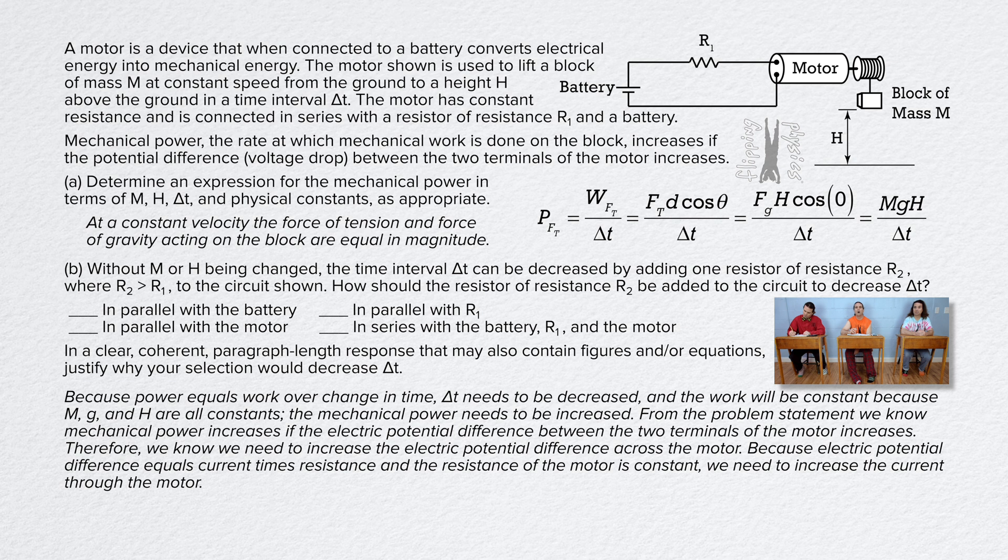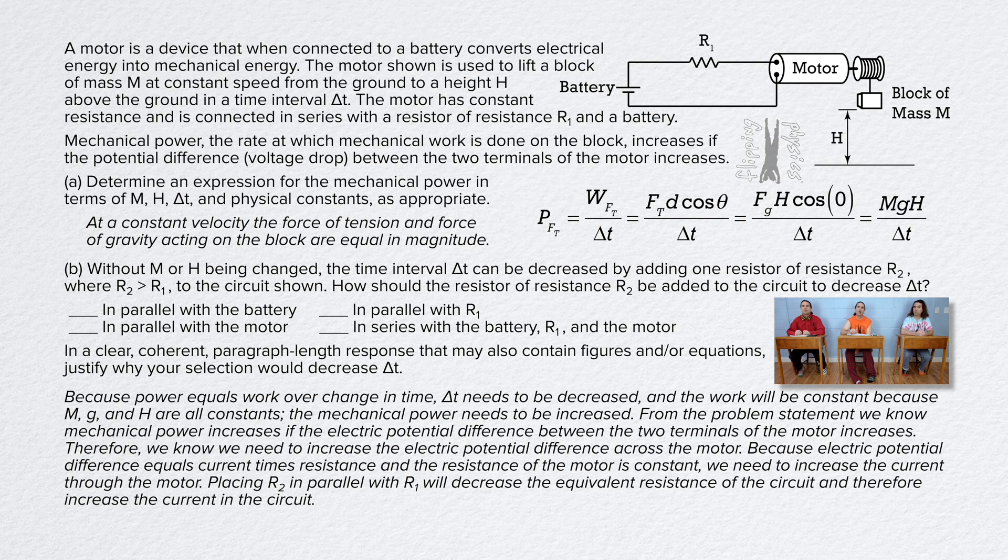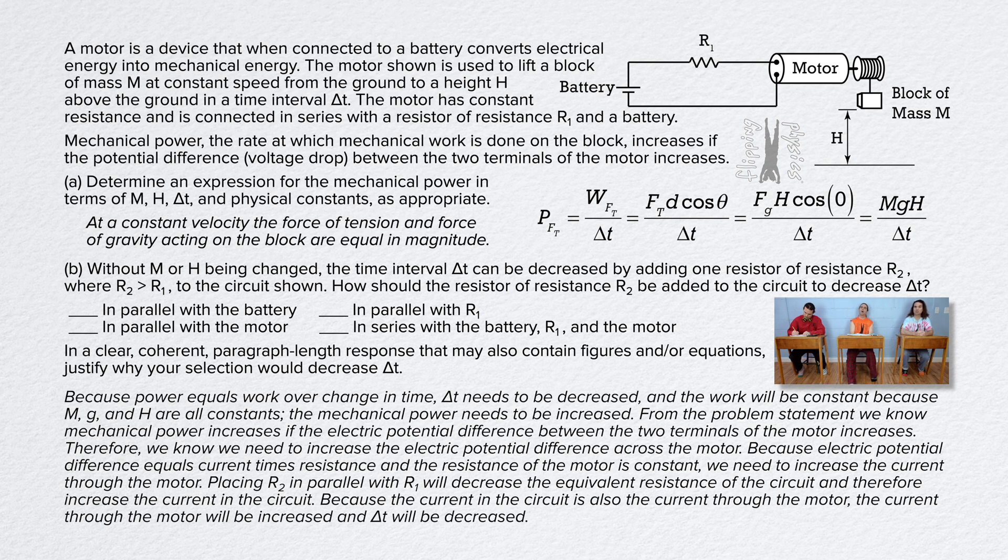Because electric potential difference equals current times resistance and the resistance of the motor is constant, we need to increase the current through the motor. Placing resistor 2 in parallel with resistor 1 will decrease the equivalent resistance of the circuit and therefore increase the current in the circuit. Because the current in the circuit is also the current through the motor, the current through the motor will be increased and delta t will be decreased. Put a check mark by in parallel with resistor 1.